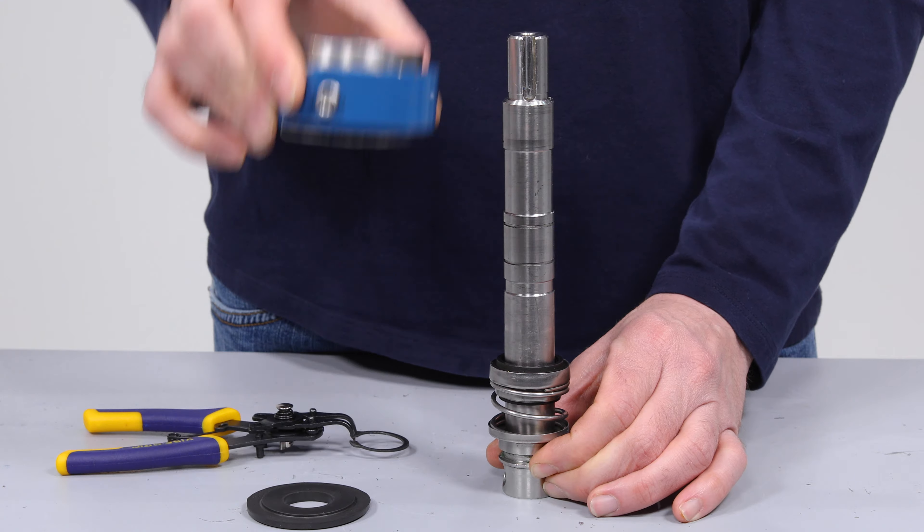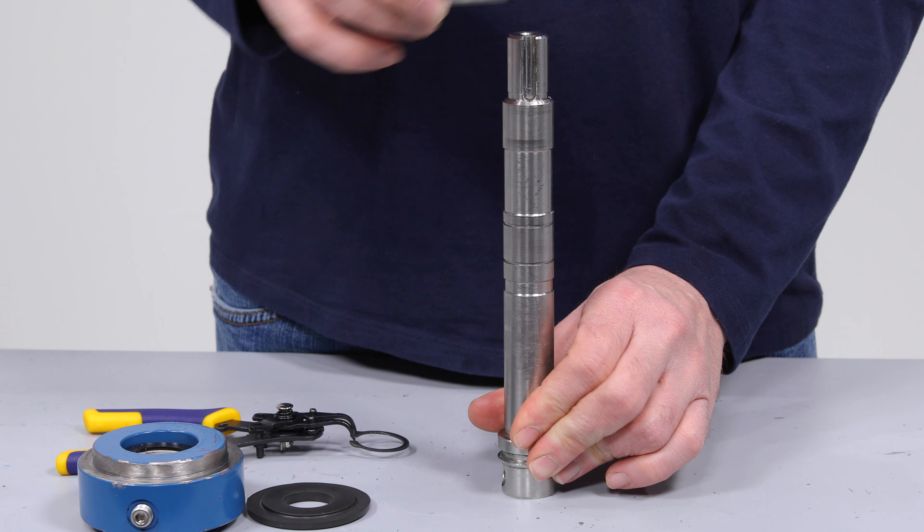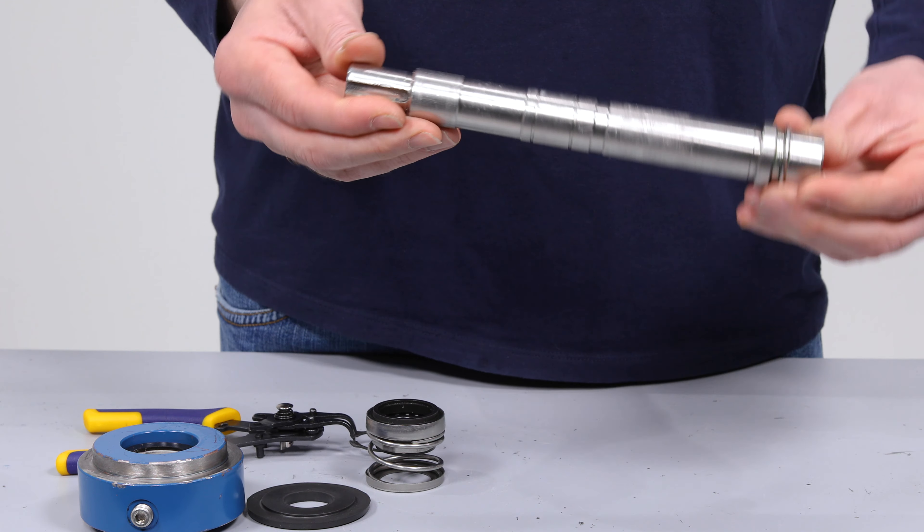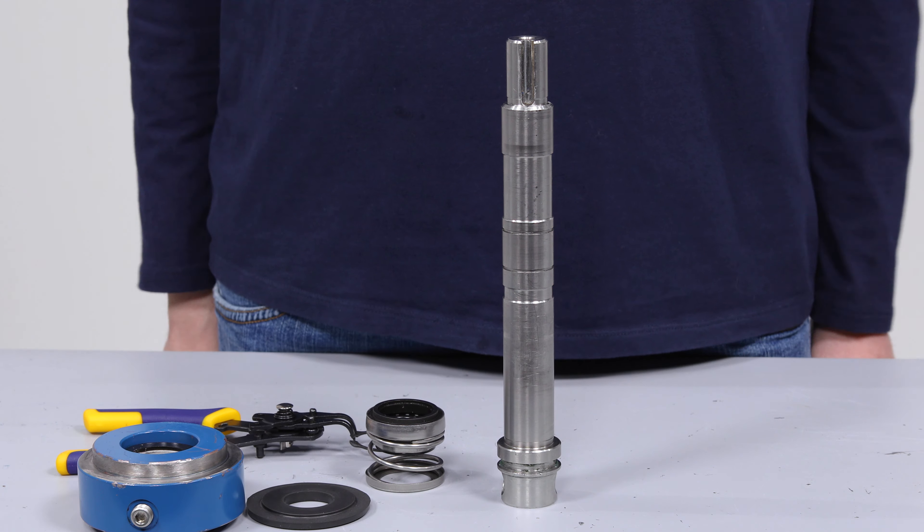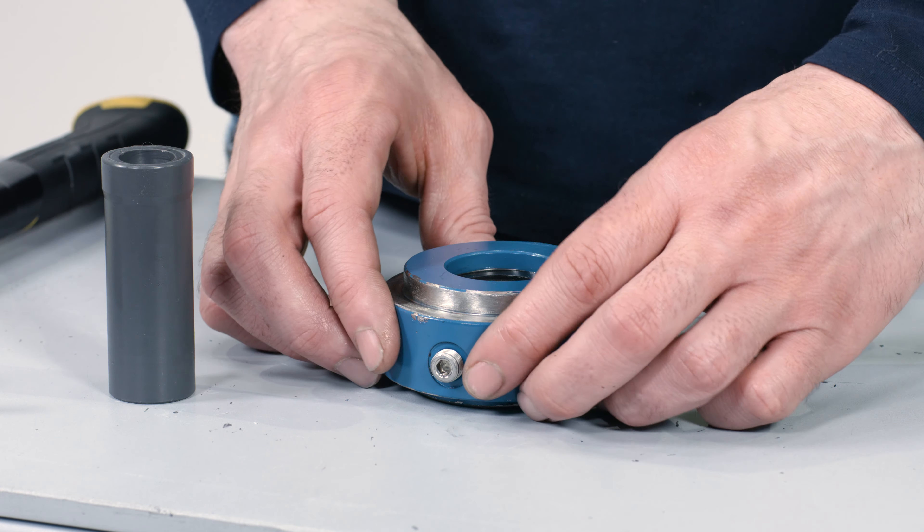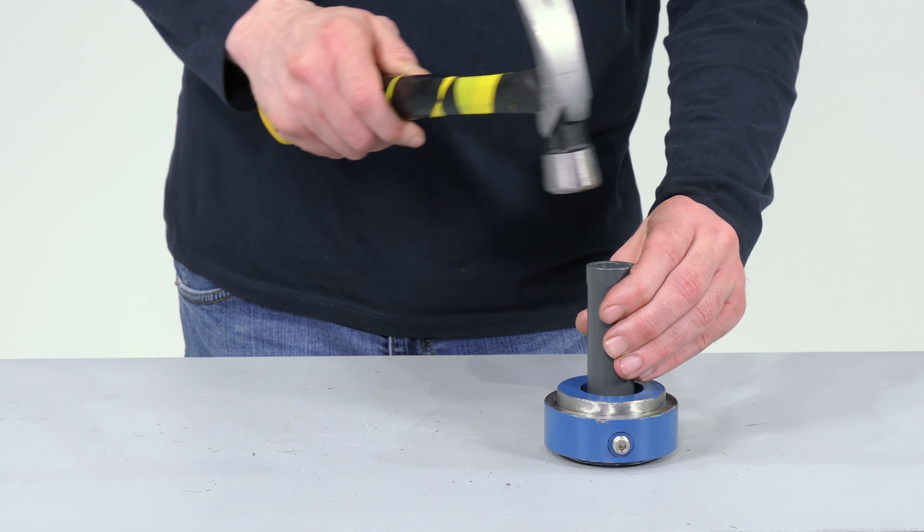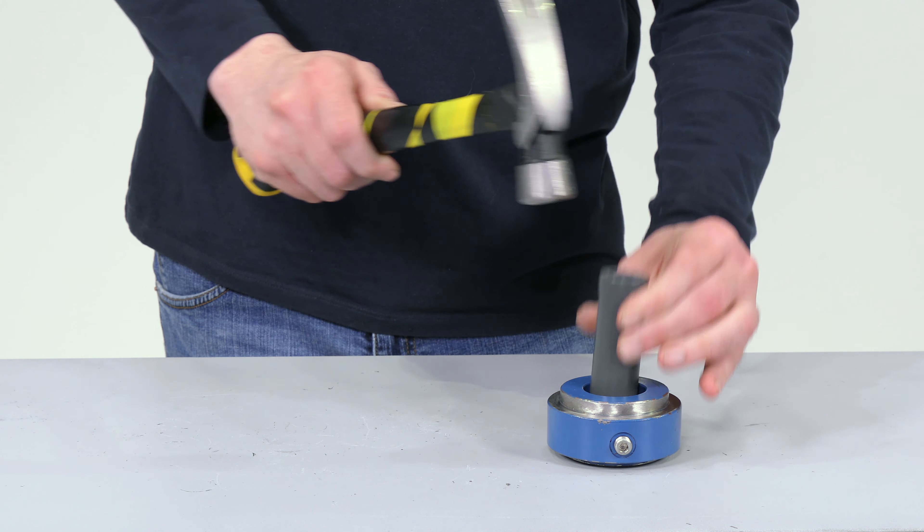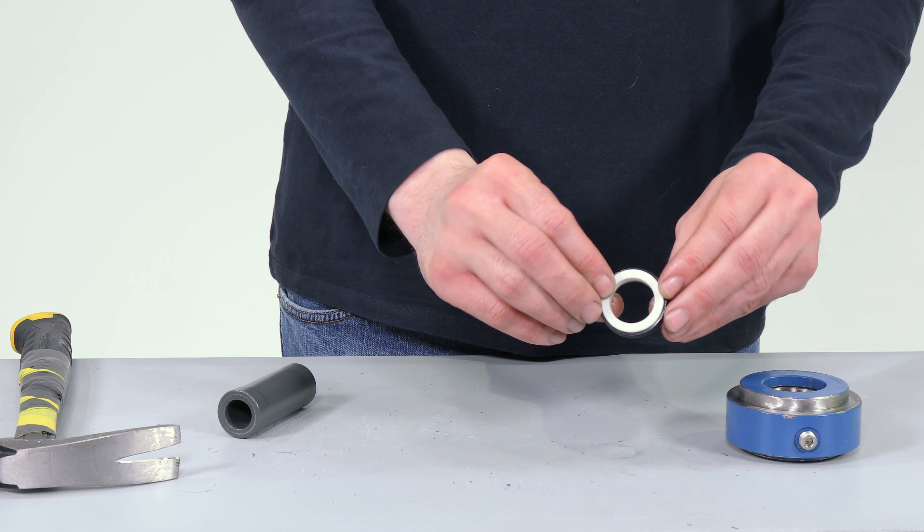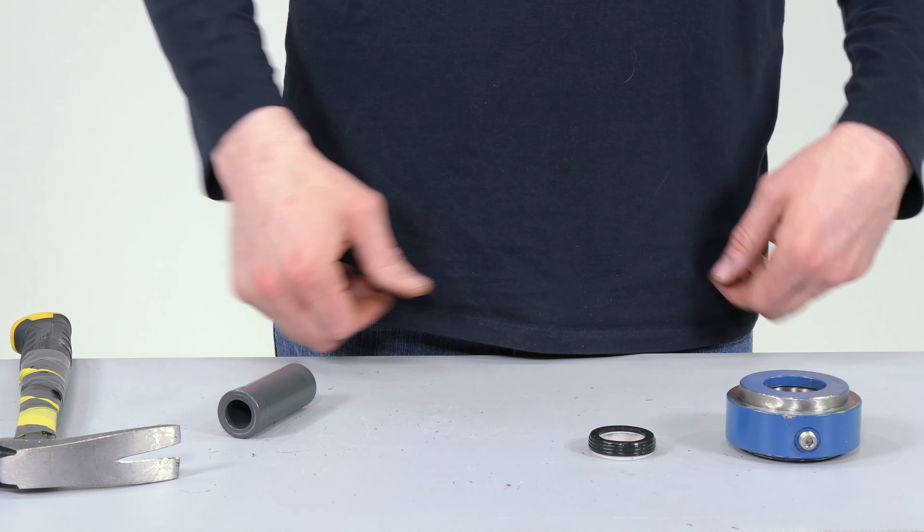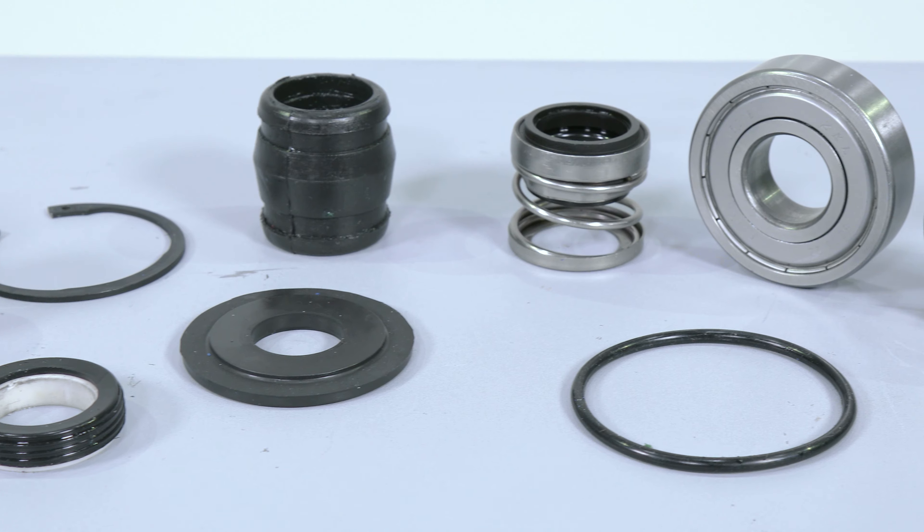Next, remove the seal housing. Remove the mechanical seal and spring. Use an adapter and hammer to remove the stationary face of the mechanical seal assembly from the seal housing. Make sure to inspect all parts for wear and replace if required.